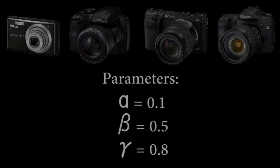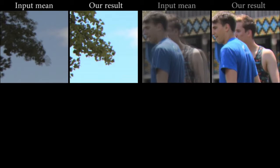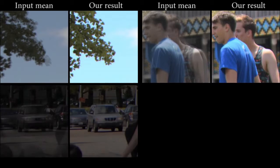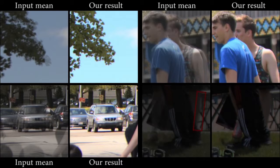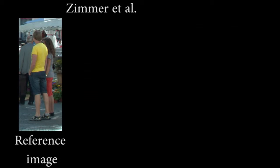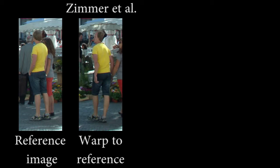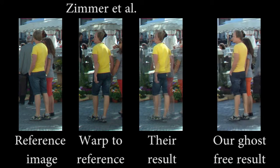We now demonstrate our results. Our method successfully handles small displacements without potentially introducing distortions from flow. Here we see small displacements in the input images, in the trees and in people, and these are reconstructed without ghosting. Compared to the recent method of Zimmer et al., which uses flow to align images, we are robust to unpleasant distortions.